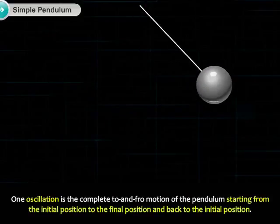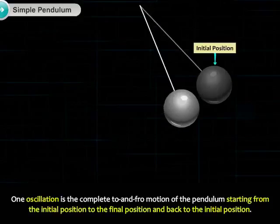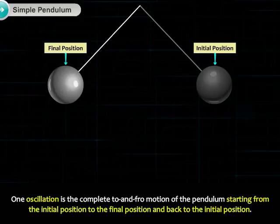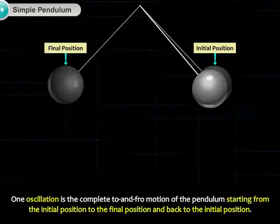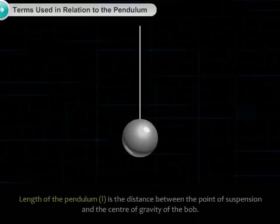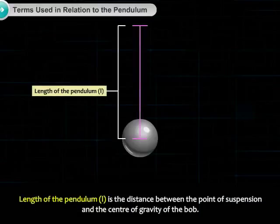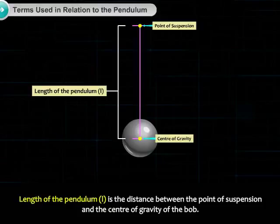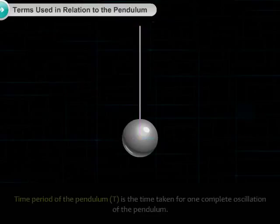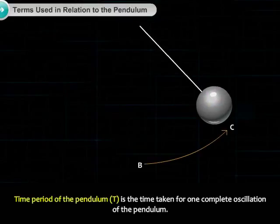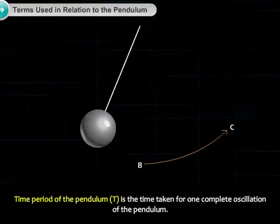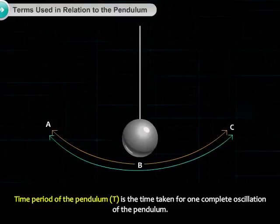One oscillation is the complete to and fro motion of the pendulum, starting from the initial position to the final position and back to the initial position. Length of the pendulum (L) is the distance between the point of suspension and the center of gravity of the bob. Time period of the pendulum (T) is the time taken for one complete oscillation of the pendulum.